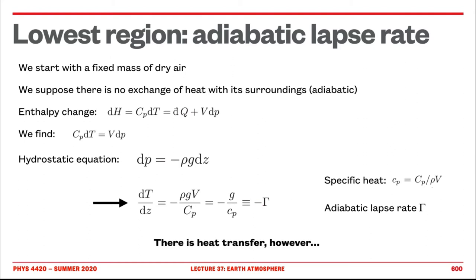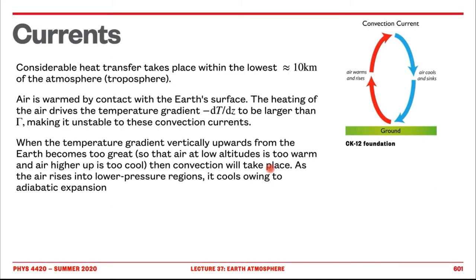However, the reality is that there is some heat transfer — it's not completely adiabatic. In the troposphere, the air is warm particularly in contact with the Earth's surface. That heating leads the air to become hotter, meaning we have a larger gradient due to this heating. Going back to the previous equations, we don't have equilibrium between the hydrostatic pressure and the change in temperature in the air, so the dry air is forced to rise. The air warms and then rises.